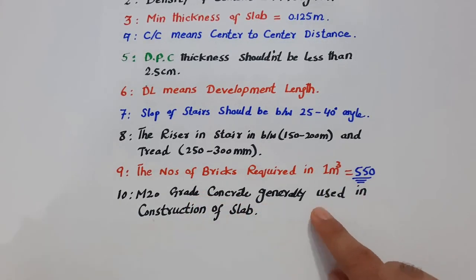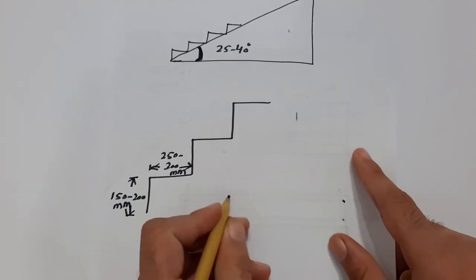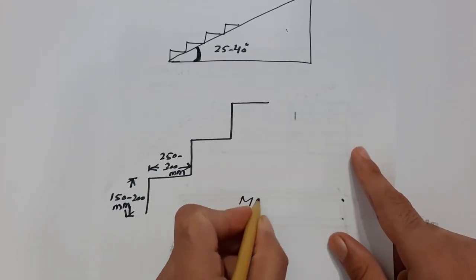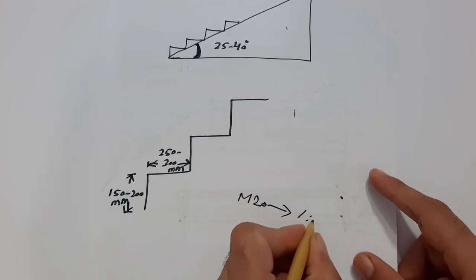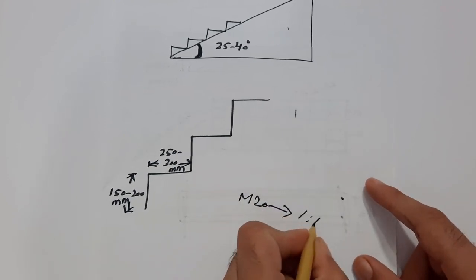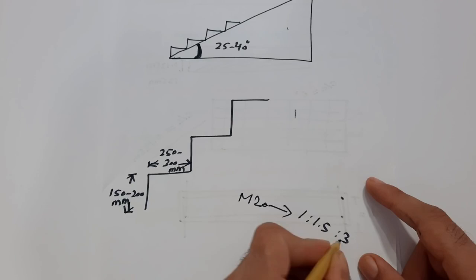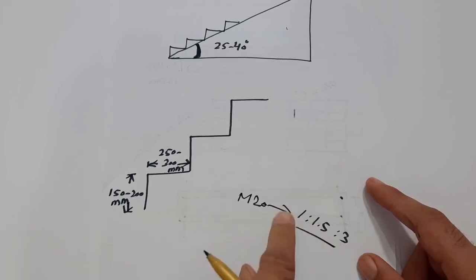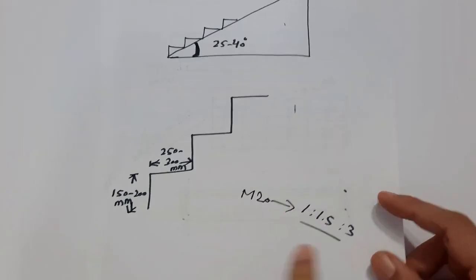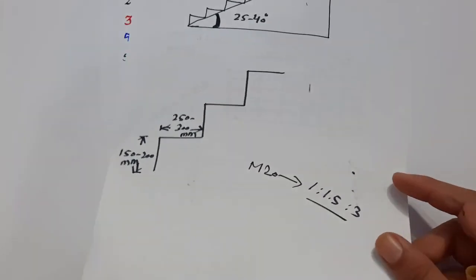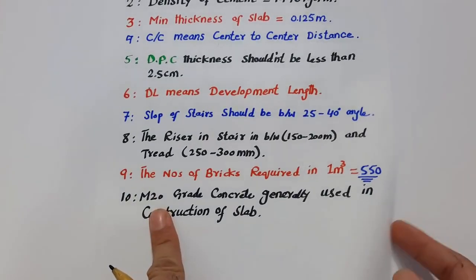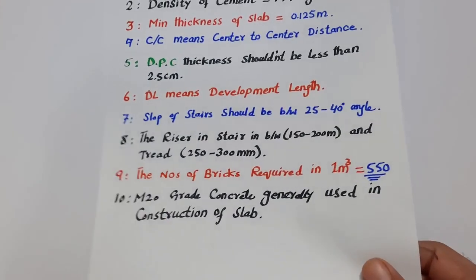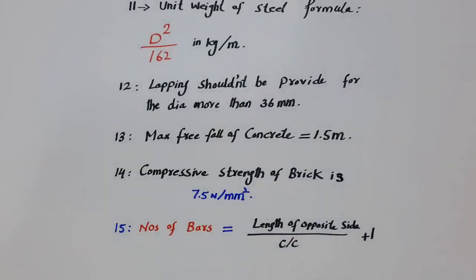The tenth one is M20 grade concrete, which is generally used in construction. M20 means the mix ratio is 1:1.5:3 — that is cement, sand, and aggregate — and it is generally used for the construction of slabs.